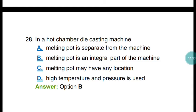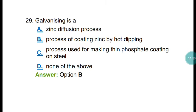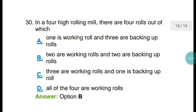Question number twenty-eight: in a hot chamber die casting machine, the melting pot is an integral part of the machine. In cold chamber die casting, the melting pot is not an integral part. The correct answer is option B. Question number twenty-nine: galvanizing is a process of coating zinc by hot dipping. The correct answer is option B.